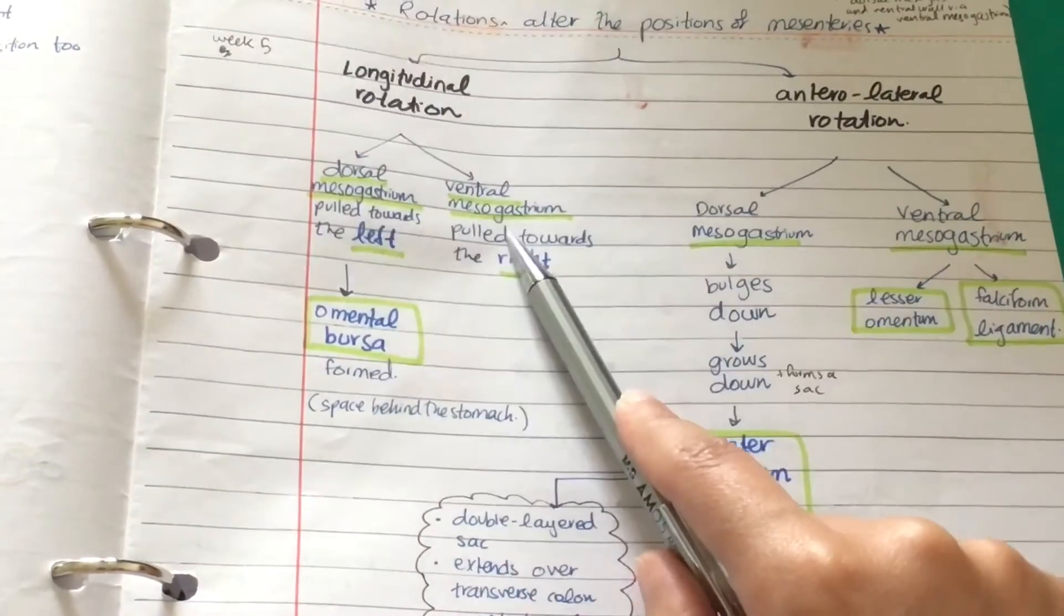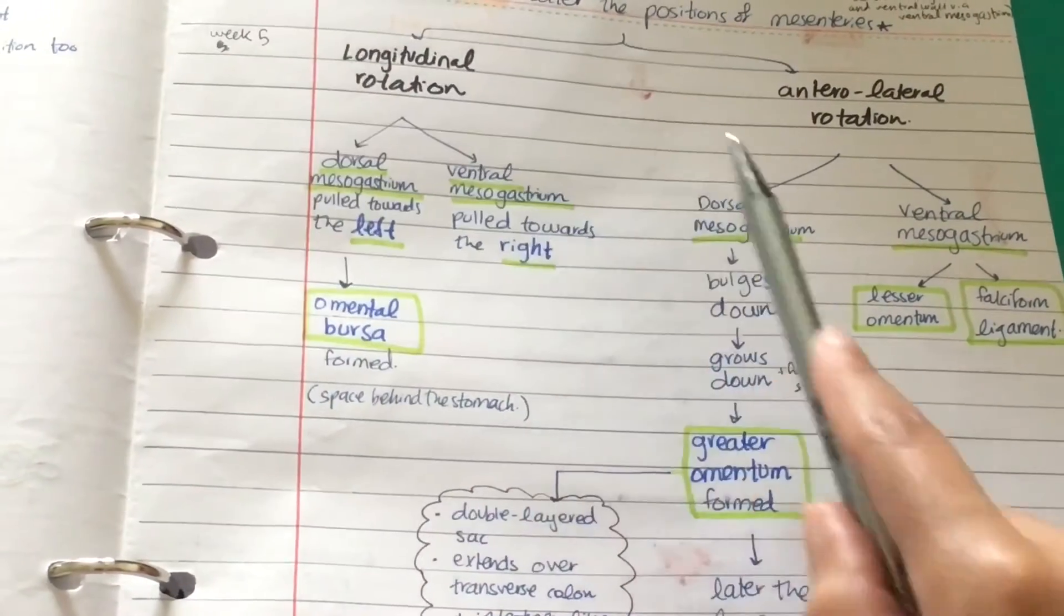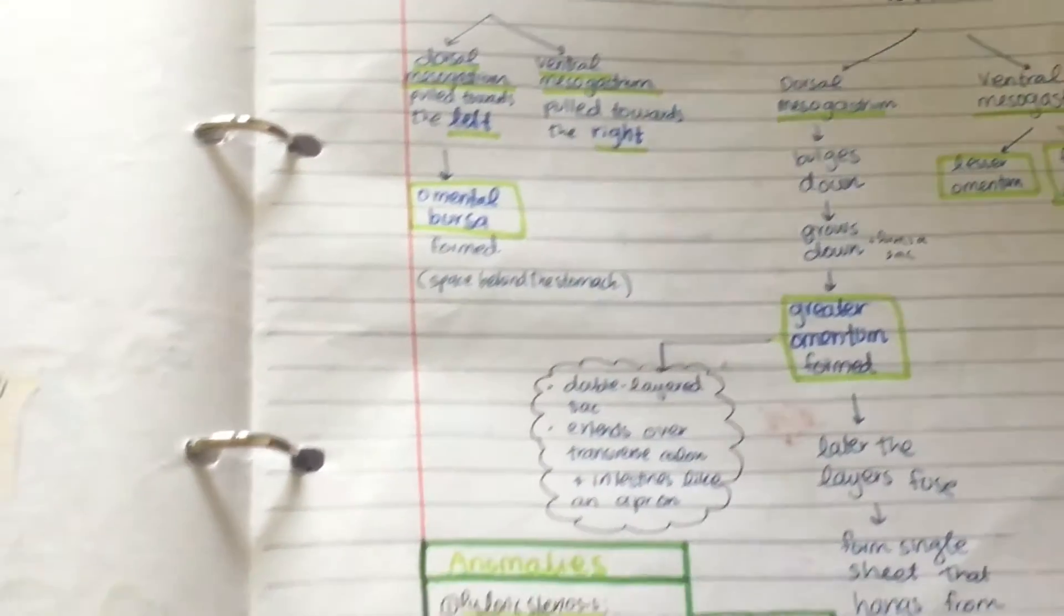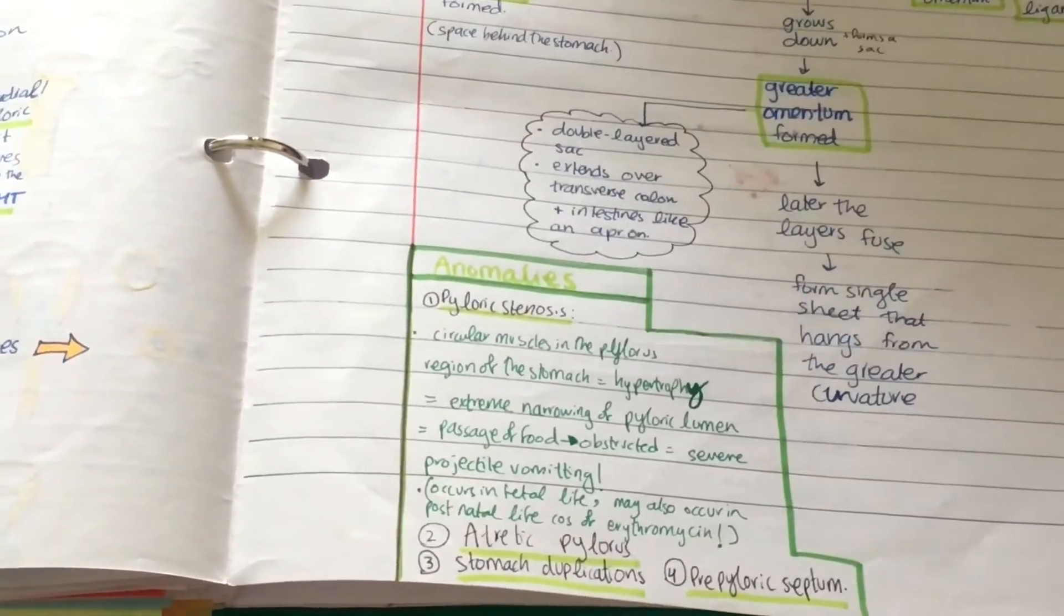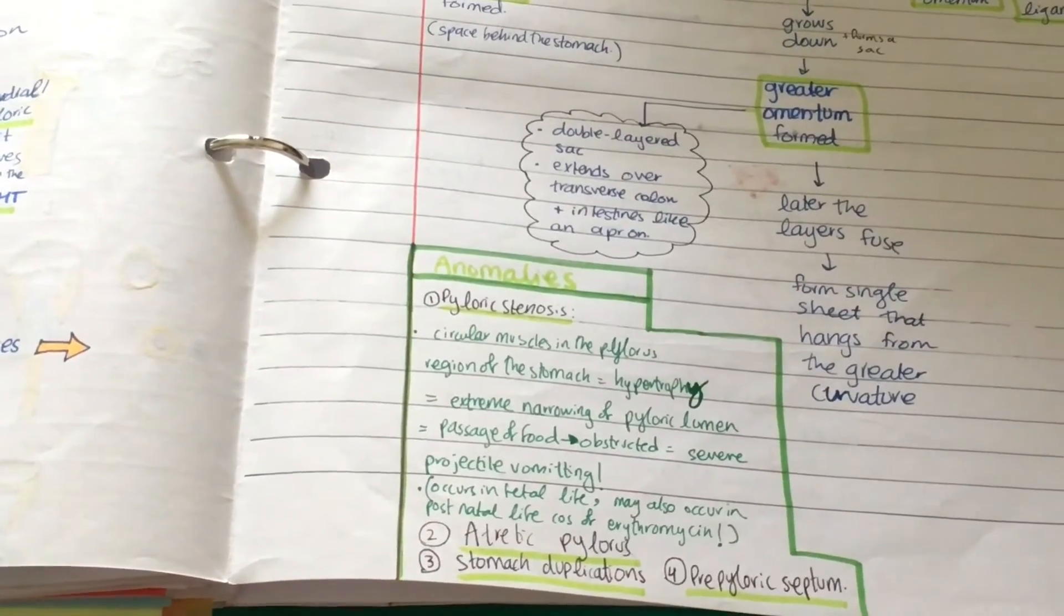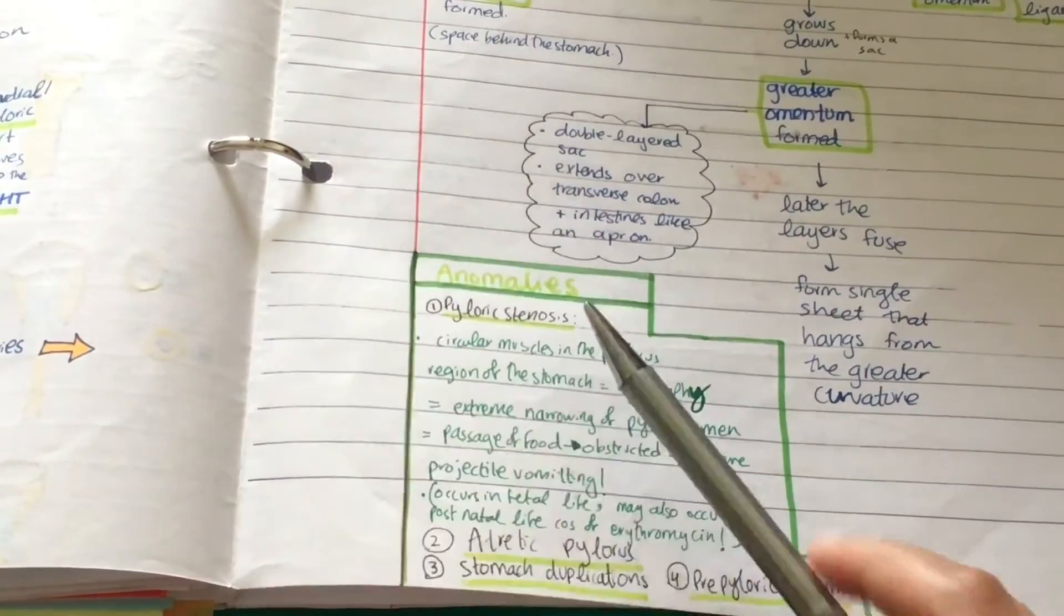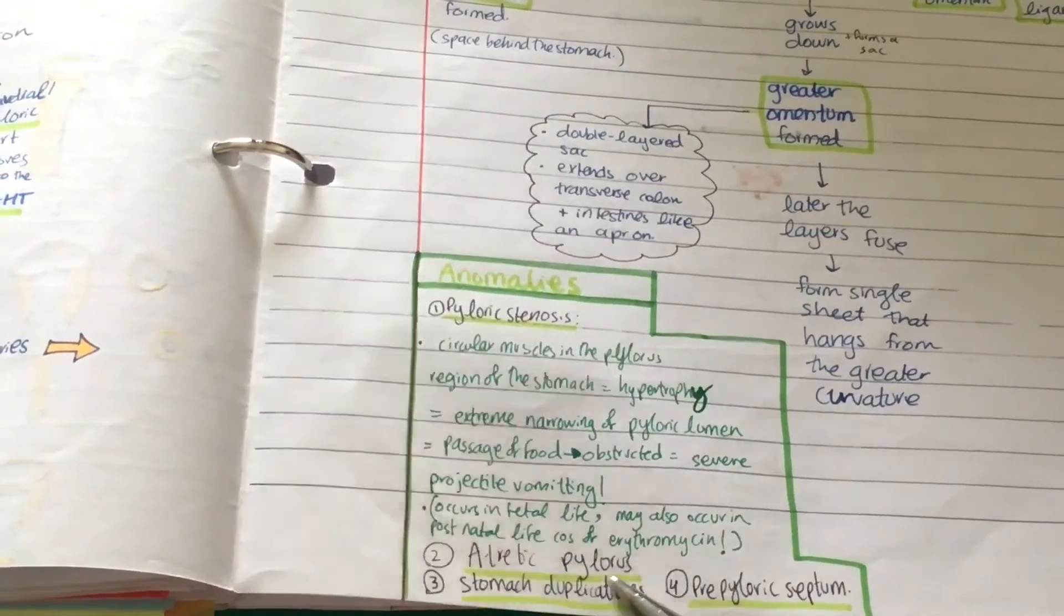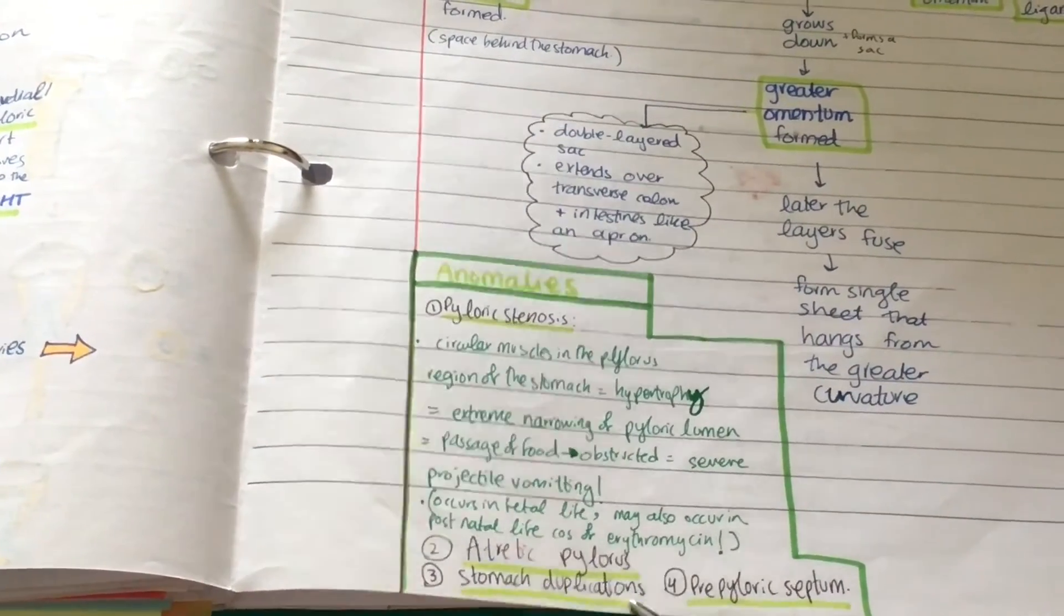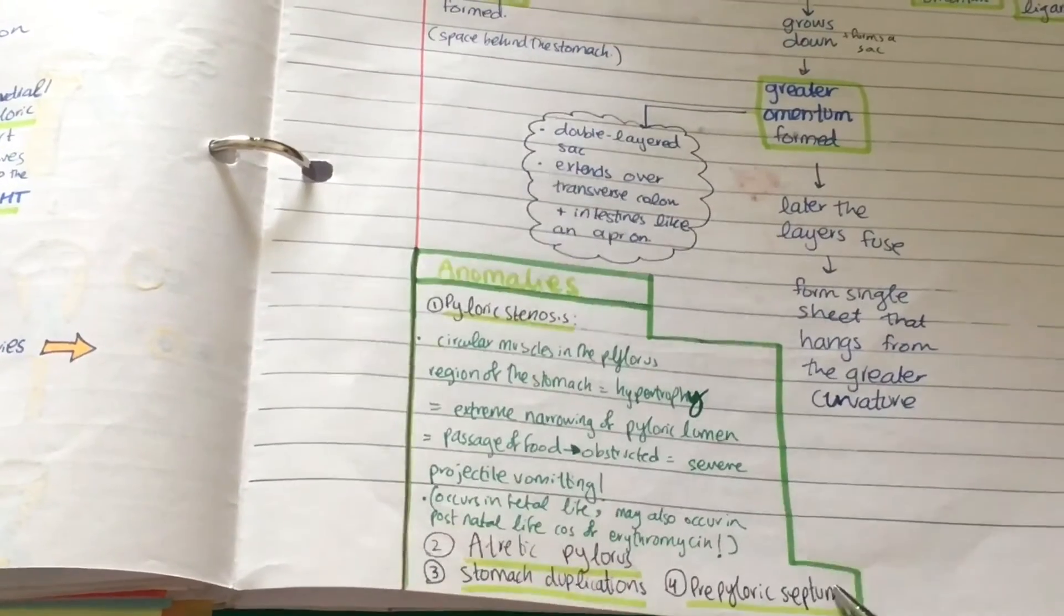Now the anomalies. Of course this is also going to have anomalies. You have four: pyloric stenosis, atretic pylorus, stomach duplications, and prepyloric septum.